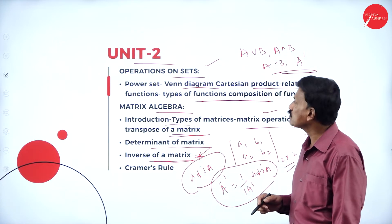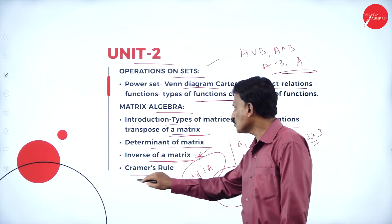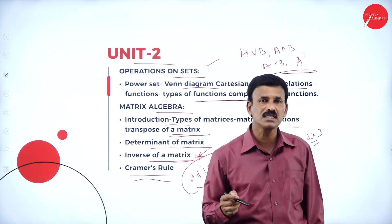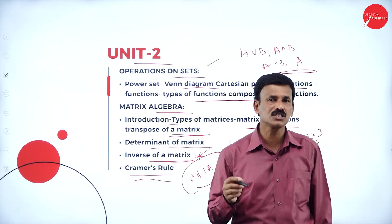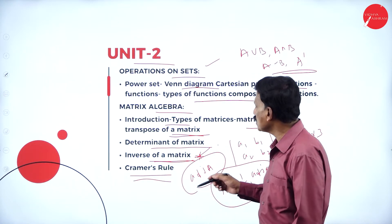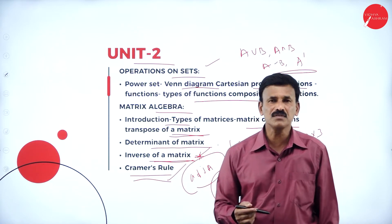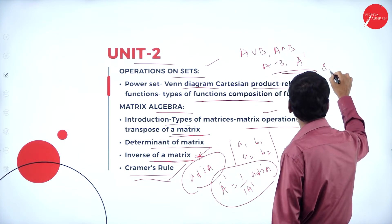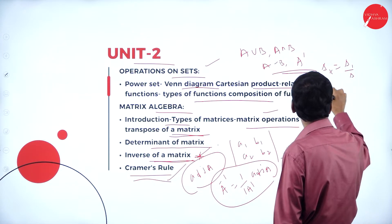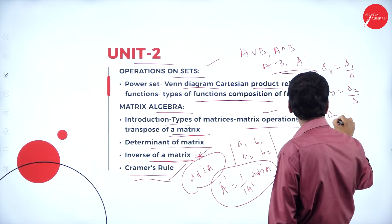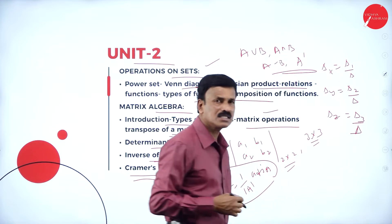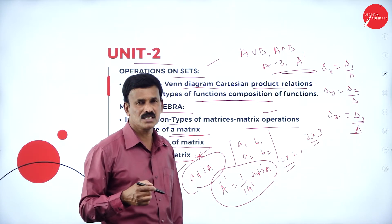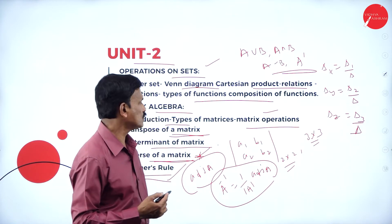The last concept in matrix algebra is Cramer's rule — solving simultaneous equations of 2 or 3 variables using determinant method. The formula is: x equals delta1 divided by delta, y equals delta2 divided by delta, and z equals delta3 divided by delta, for a system of 3 equations with 3 unknowns.